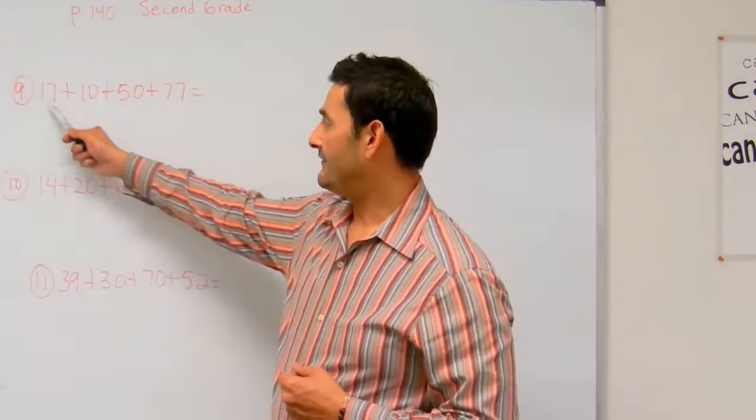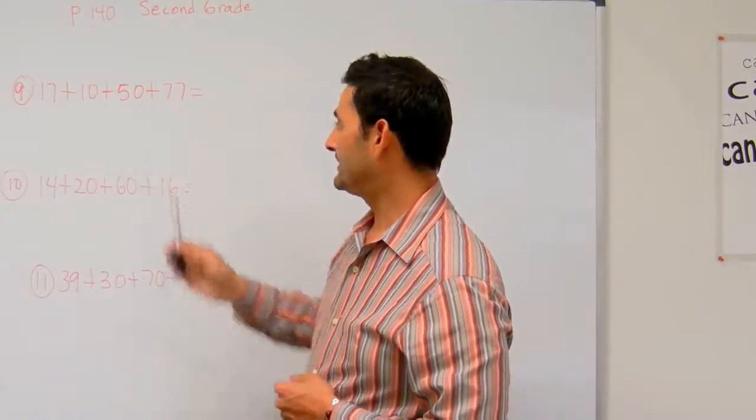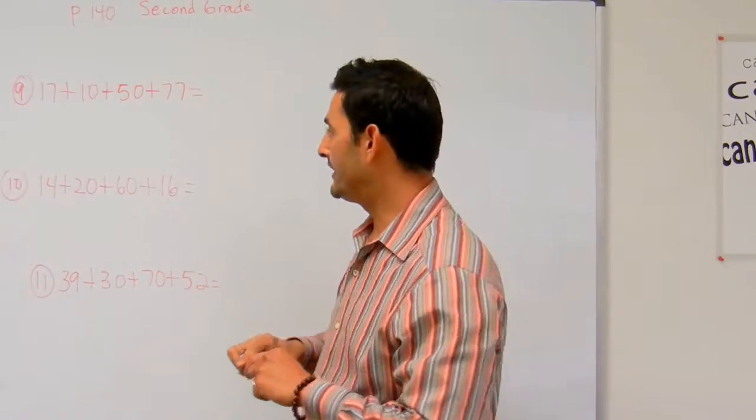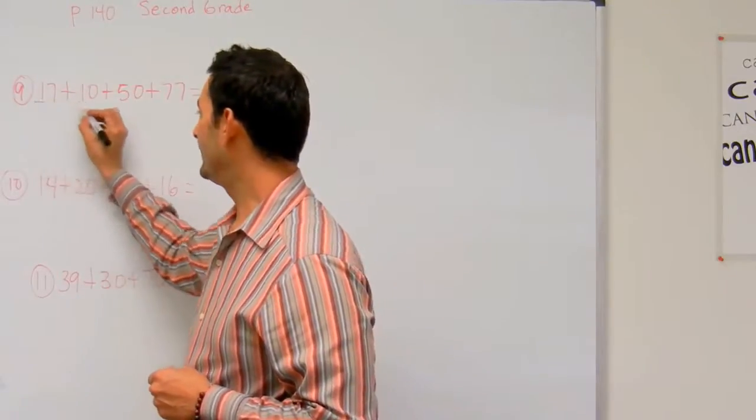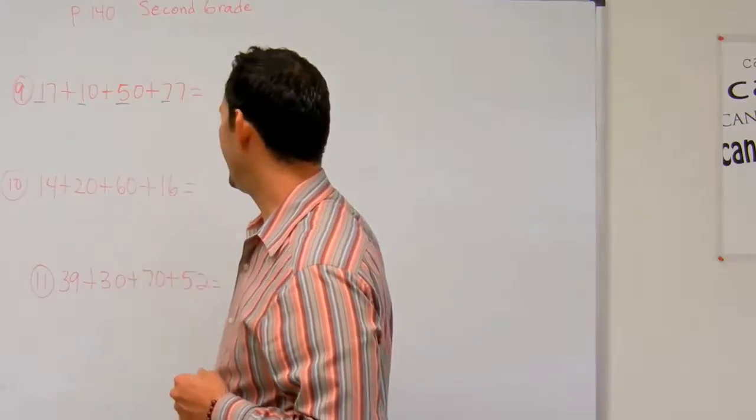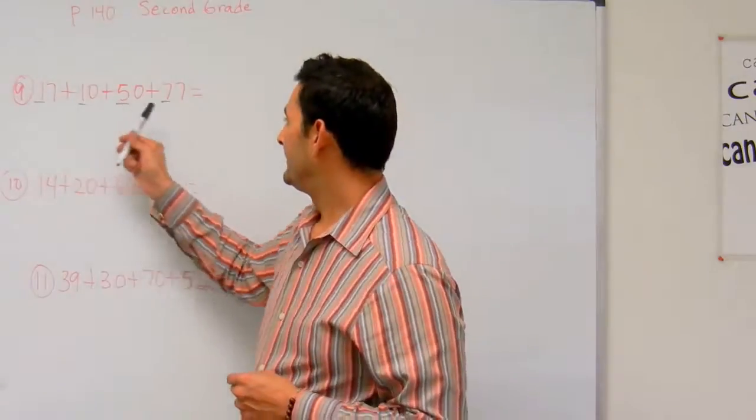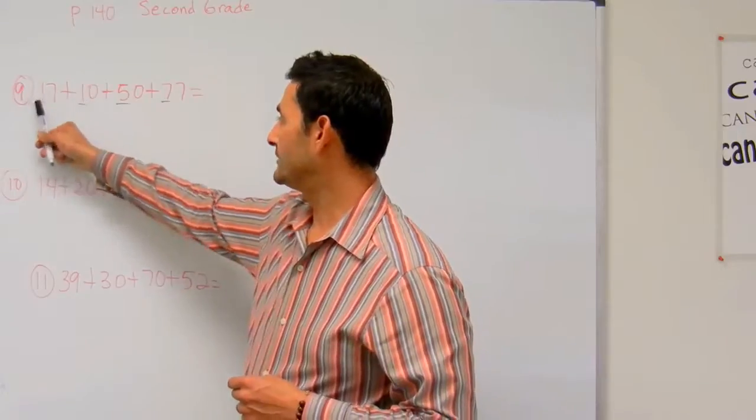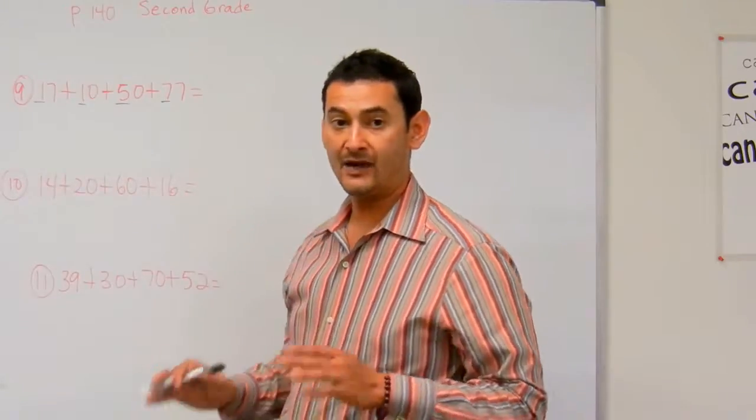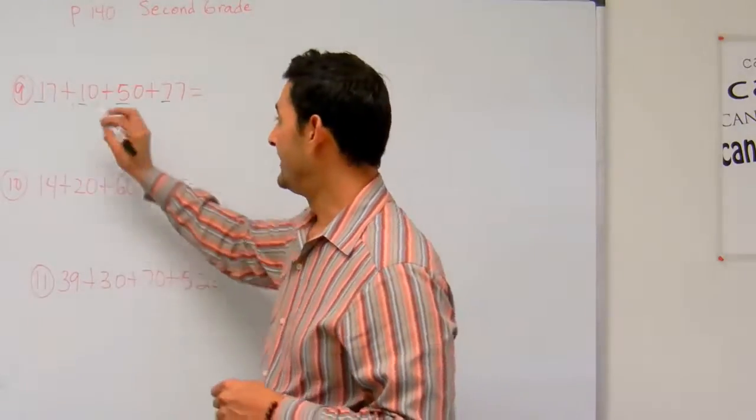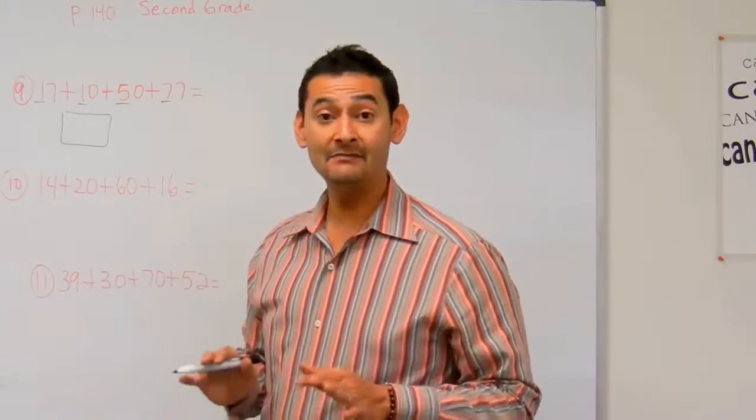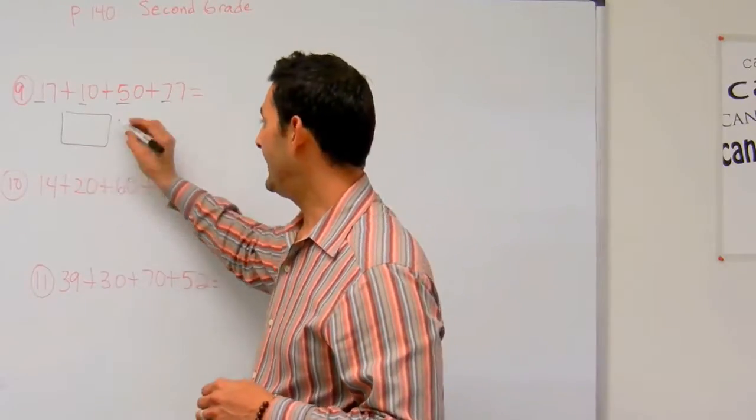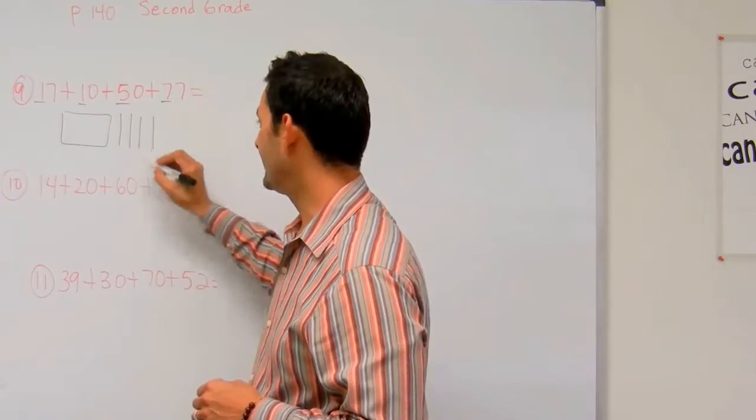So here I've got 17 plus 10 plus 50 plus 77. So what I'm going to do here is I'm going to underline the tens. So here I've got 7 plus 5, that's 12, plus one more is 13, plus one more is 14. So I have 14 bundles of 10. And remember, the hundred is 10 bundles of 10. So I've got 10, 11, 12, 13, 14.